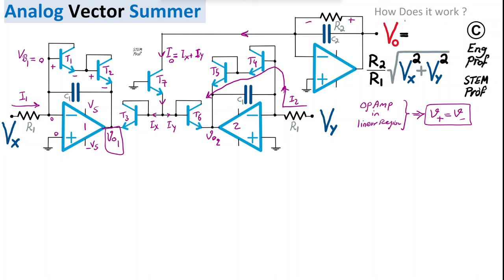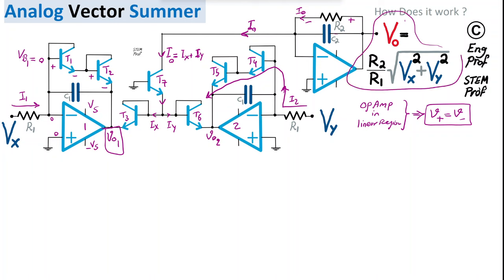When Iout passes through R2, it produces a voltage drop across R2 that defines the output voltage Vout. We want to show that this output follows the vector summation formula. That is the intuitive operation of the circuit.